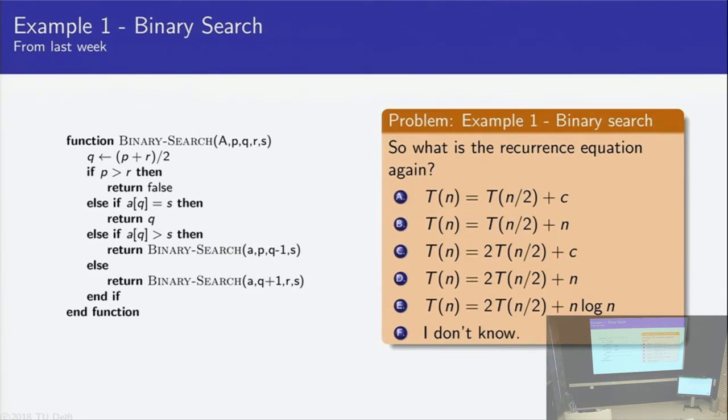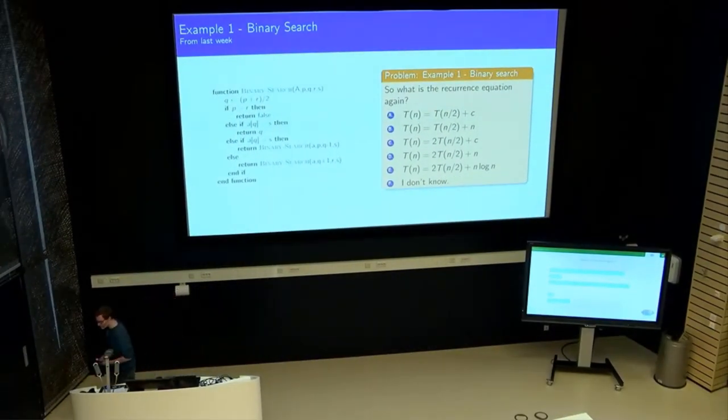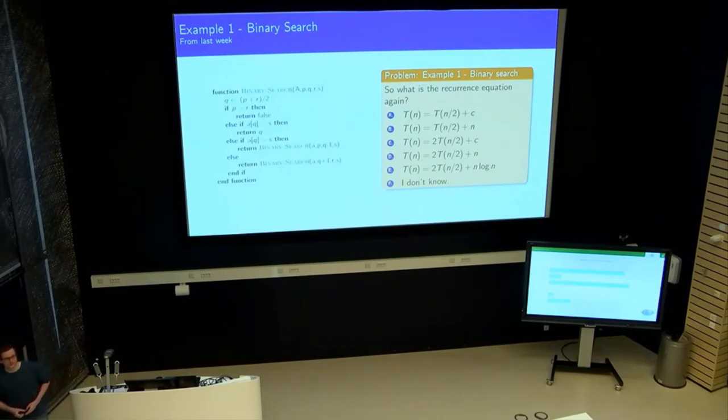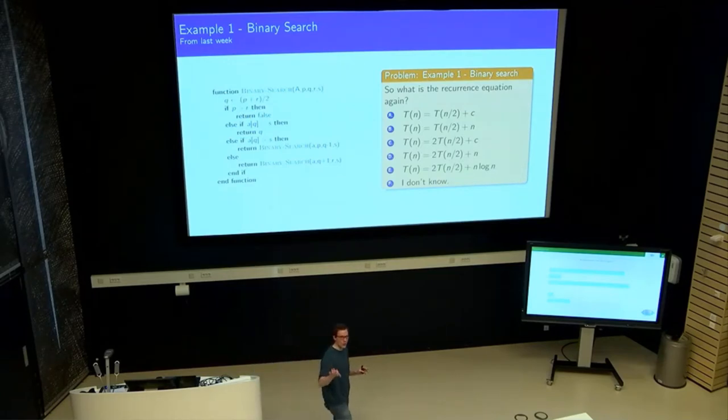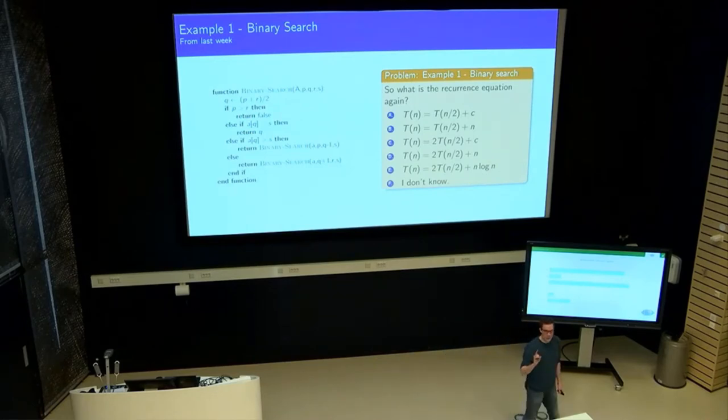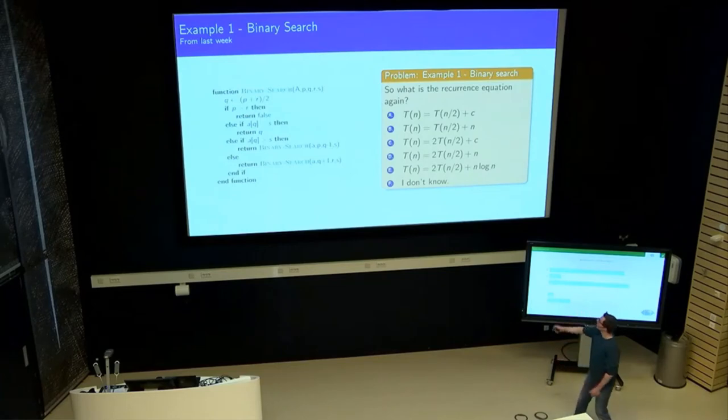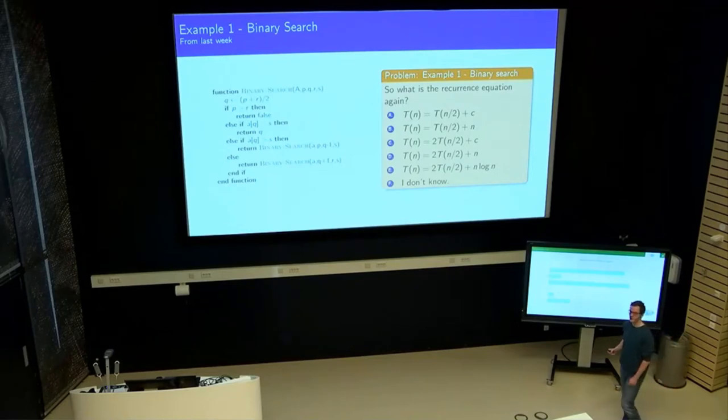Okay, so a and c are both quite popular, and the difference seems to be either one or two recursive calls. Well, remember that for binary search, the clever method of searching in the list, we only had to go to either the left or the right side of the list, never into both, so we only need one recursive call.